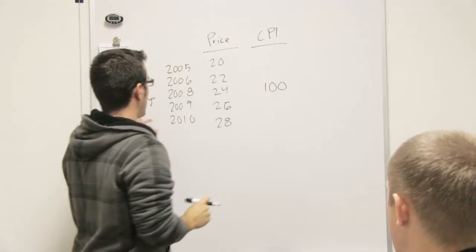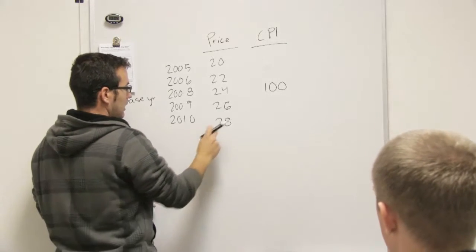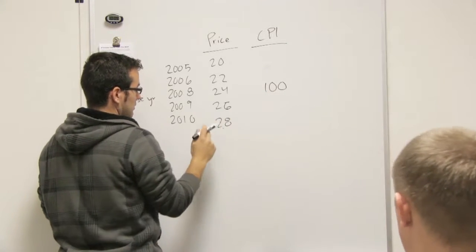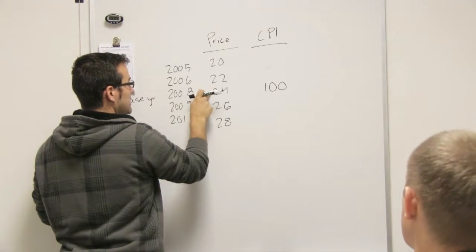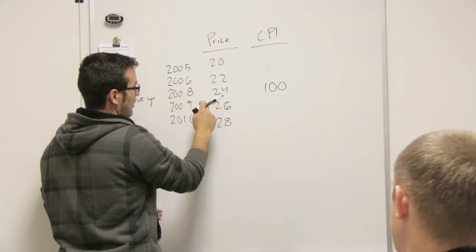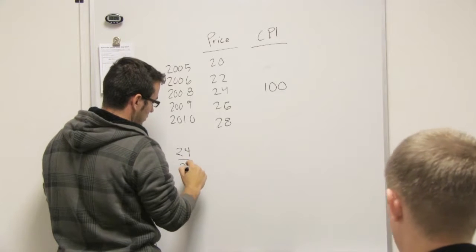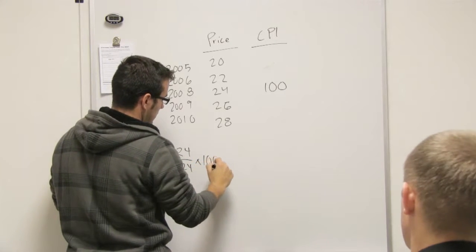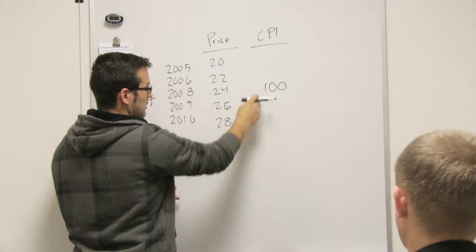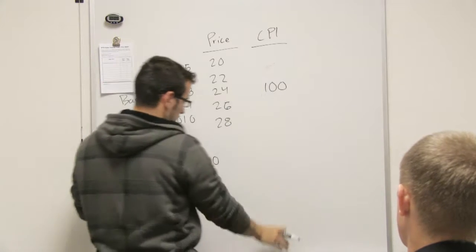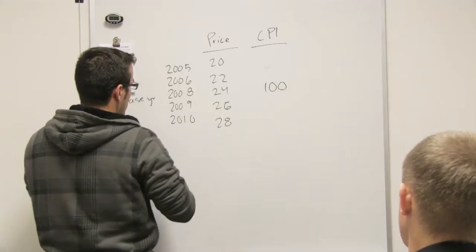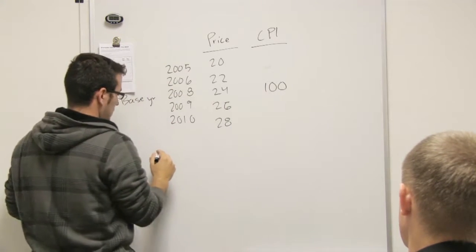So like, well I guess we can compute it here, right? If we were calculating it, the reason that that's always going to be 100 is because of the formula, right? Because you take the base year divided by that year that you're looking at. So if you're looking at 2008, it would just be 24 divided by 24 times 100, which is just one times 100, so it's always going to be 100.